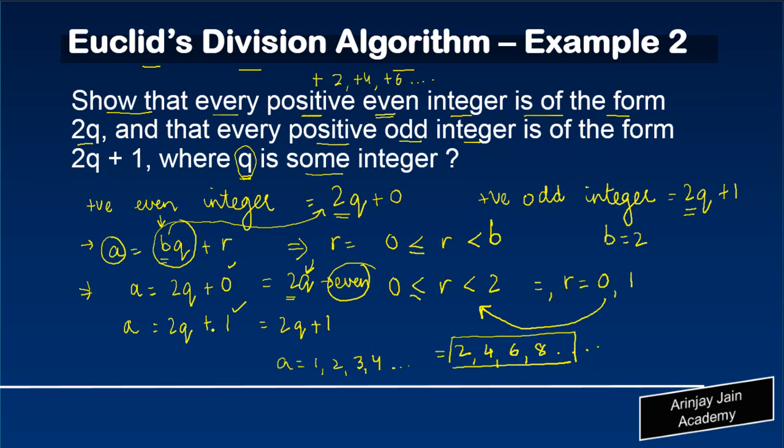As against this, if a = 2q + 1, because 2q is even, whenever we add 1 to it, we are always going to get an odd integer. And because q is positive, therefore this has to be always a positive odd integer.